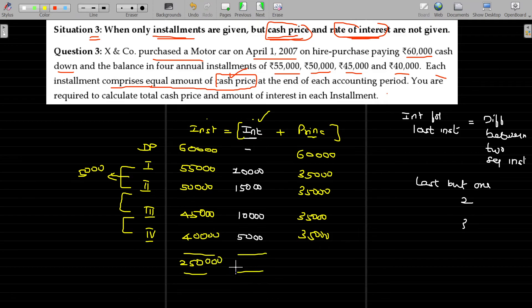Interest component overall is 50,000. Principal component overall is 2 lakhs, which is the cash price. This is interest, this is HP price. So we have now segregated everything where only installments are given.